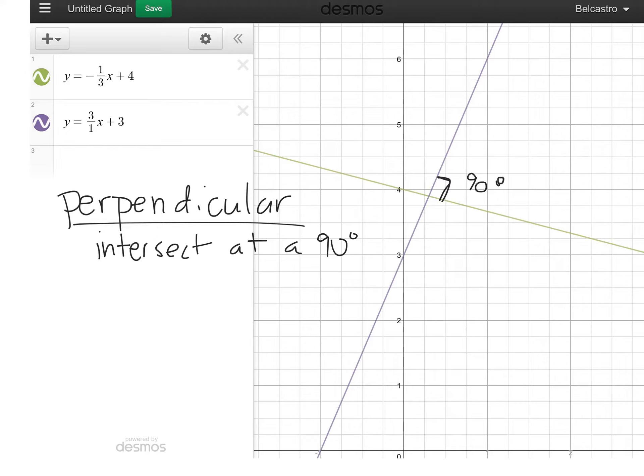What was the slope of the green line? Negative one over three. And what was the slope of the purple line? Positive three over one.